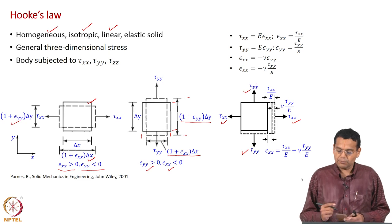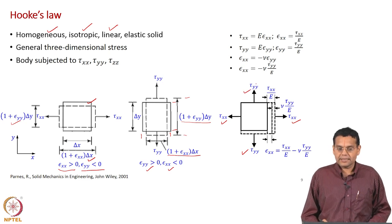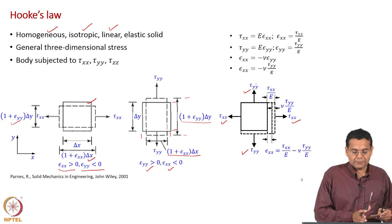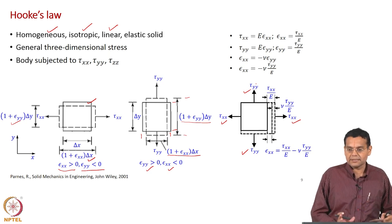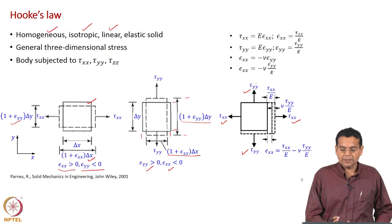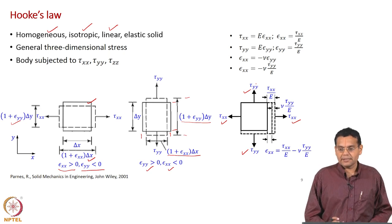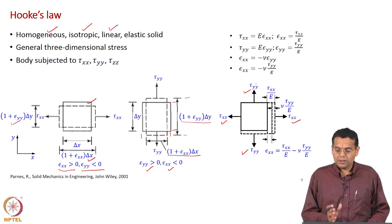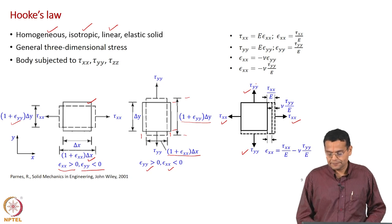The third figure represents applying both normal stresses together — tau_xx and tau_yy, both tensile stresses simultaneously. The first figure shows the plate under normal stress along x, the second under normal stress along y, and the third shows both applied together.